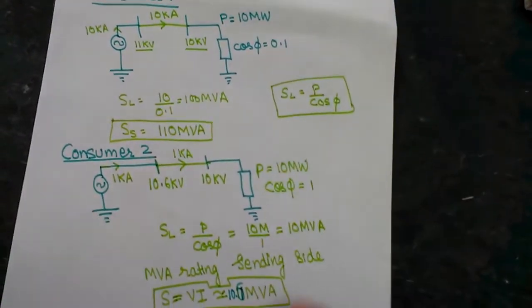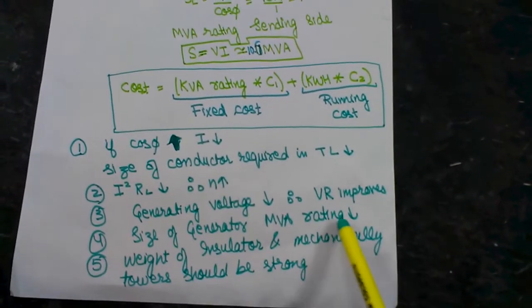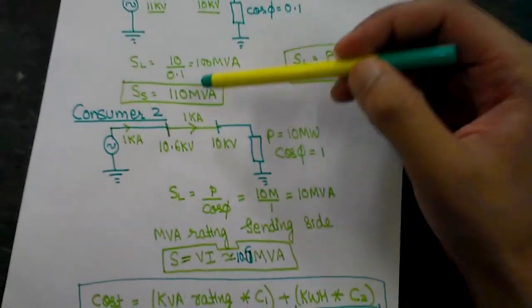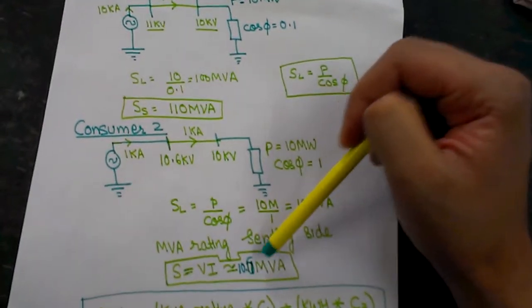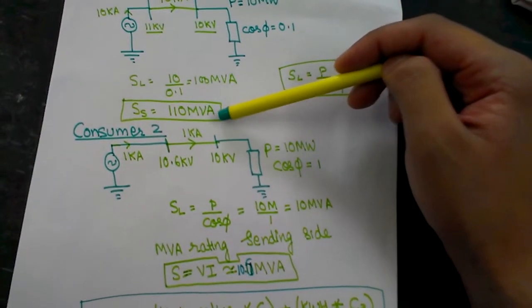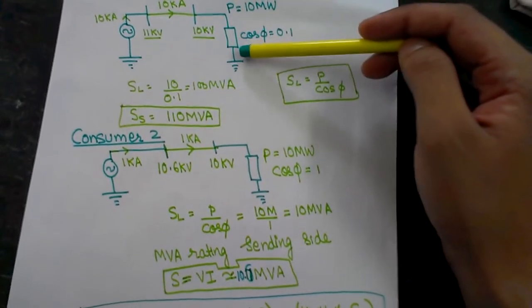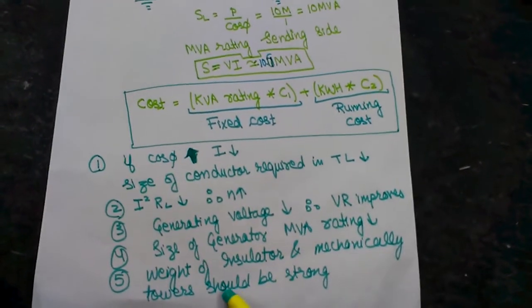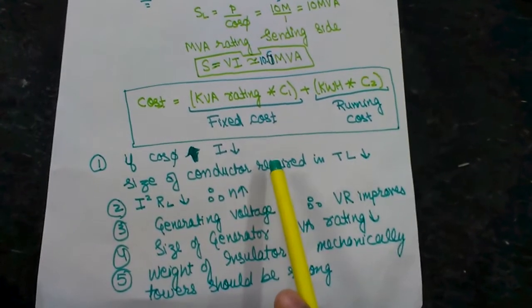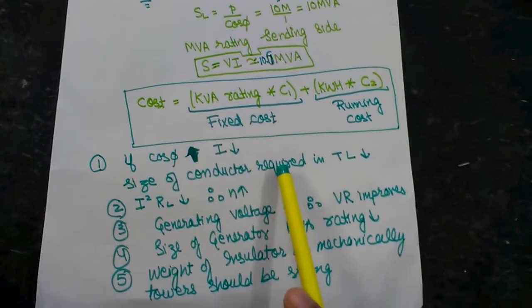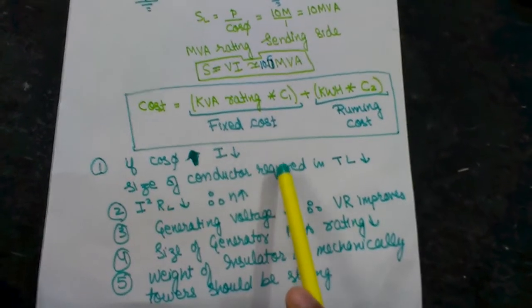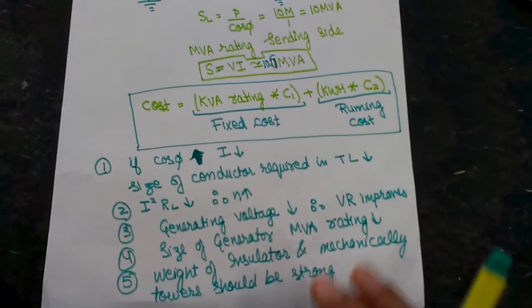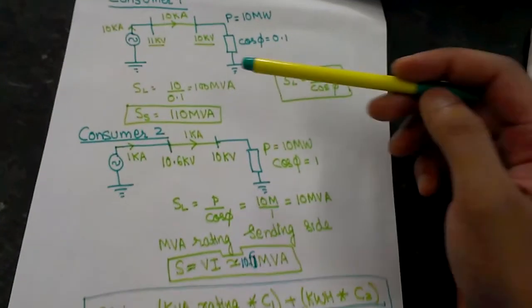The MVA rating — and therefore the physical size — of the generator also decreases. Here they had to generate 110 MVA versus only 10.6 MVA, so they need a bigger generator to supply the poor power factor customer. Finally, the weight of insulators and the mechanical strength of towers must be greater, because with a worse power factor the current is higher, the wires are thicker, and the insulators and towers must be strong enough to support the weight of those thick wires.